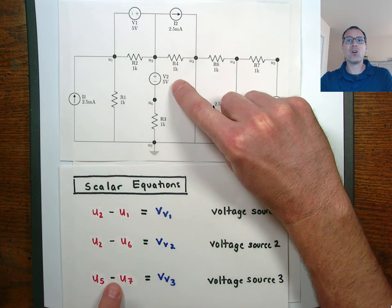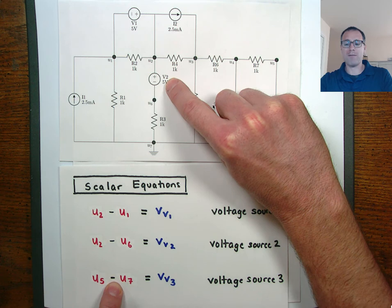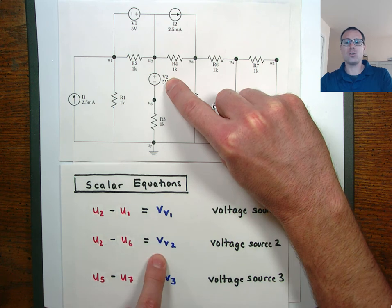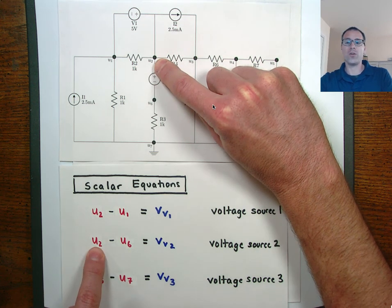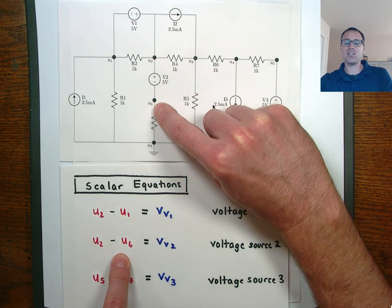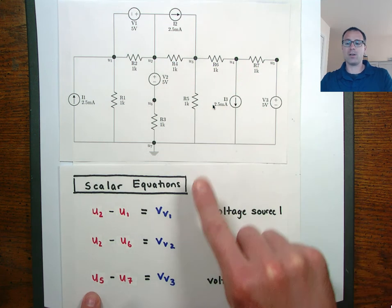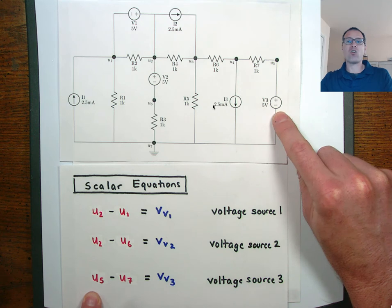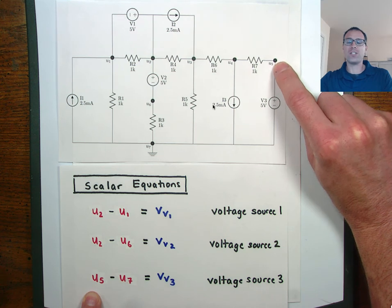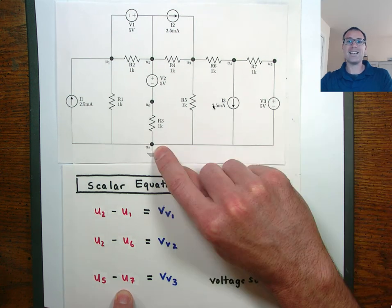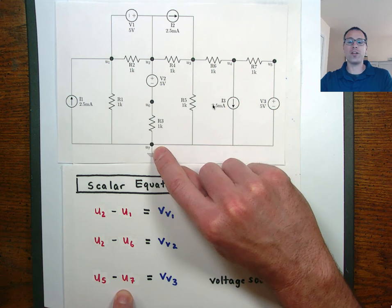The voltage drop across voltage source two, we call that V_V2, is going to be U2 minus U6. Similarly, the voltage drop across voltage source three is going to be U5 — the voltage potential variable at node five — minus U7, the voltage variable for the potential at node seven.